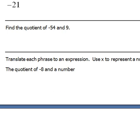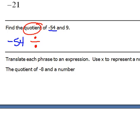Let's go through some translations. This one says find the quotient of negative fifty-four and nine. The word quotient means to divide, so we're dividing negative fifty-four and nine. Fifty-four divided by nine is six, and because the signs are different the answer would be negative six.